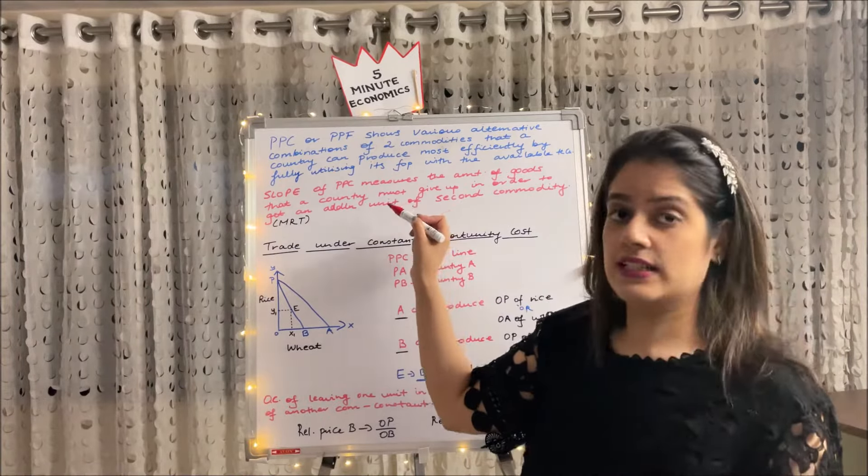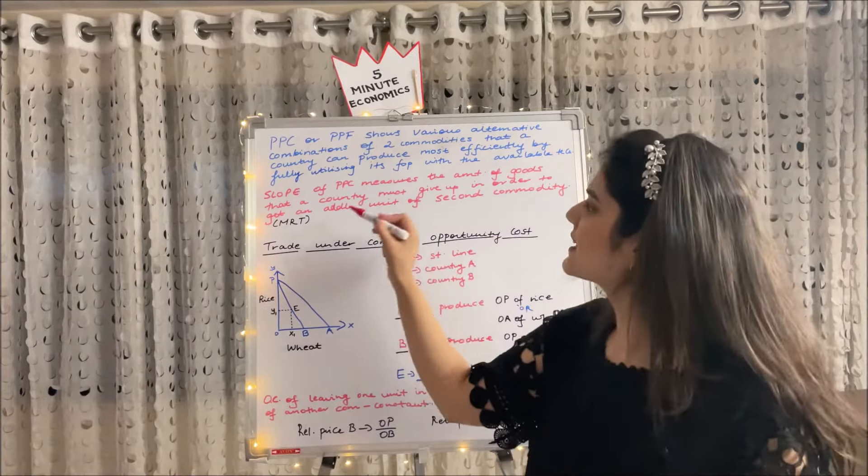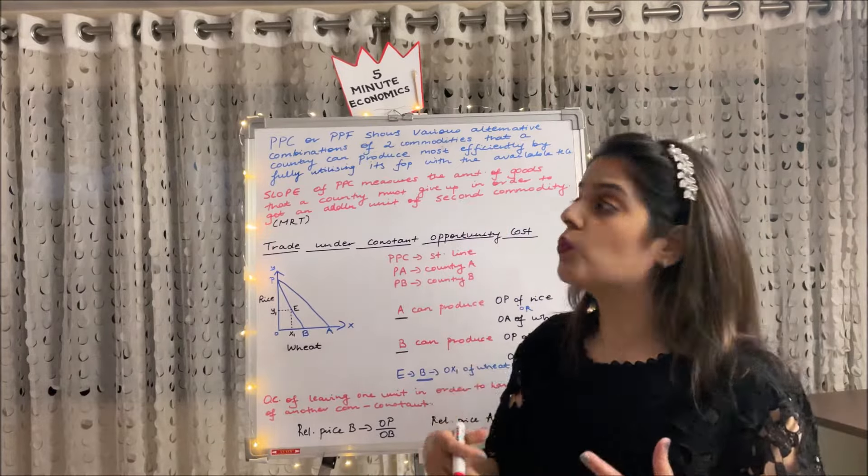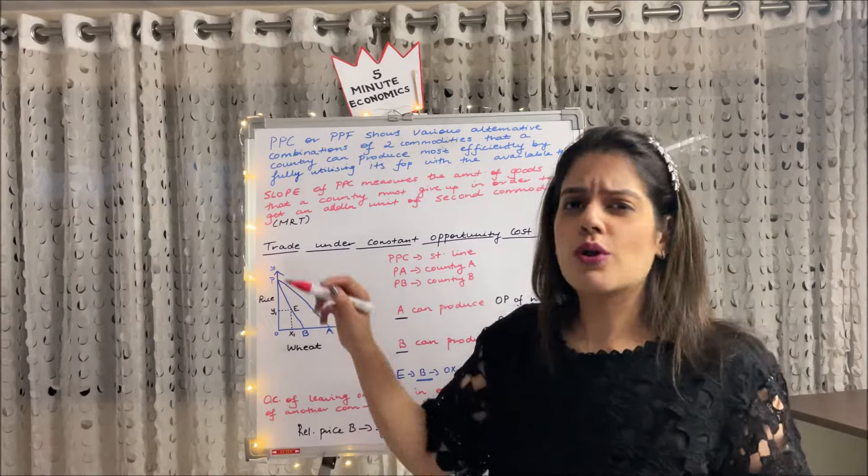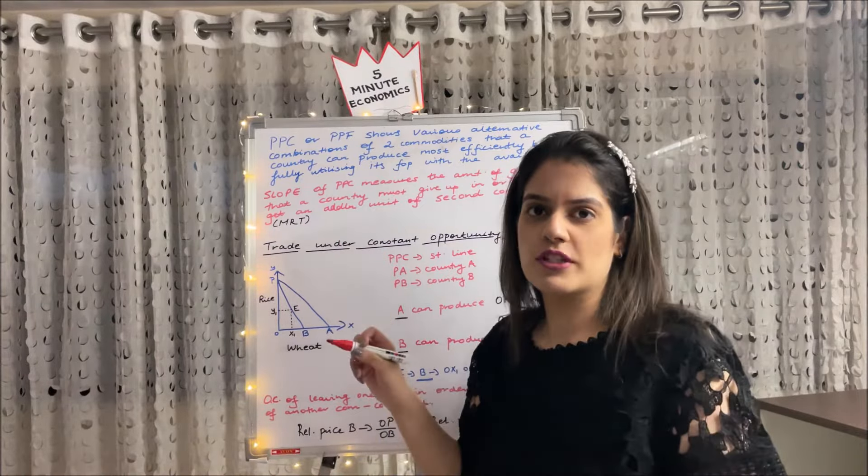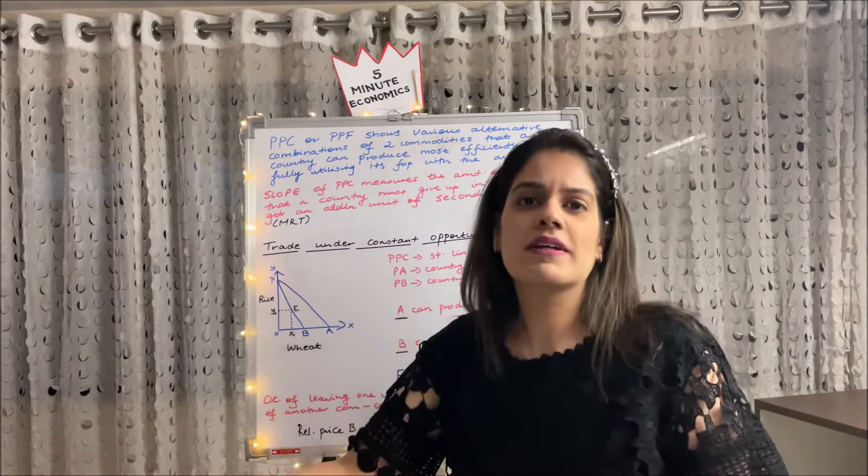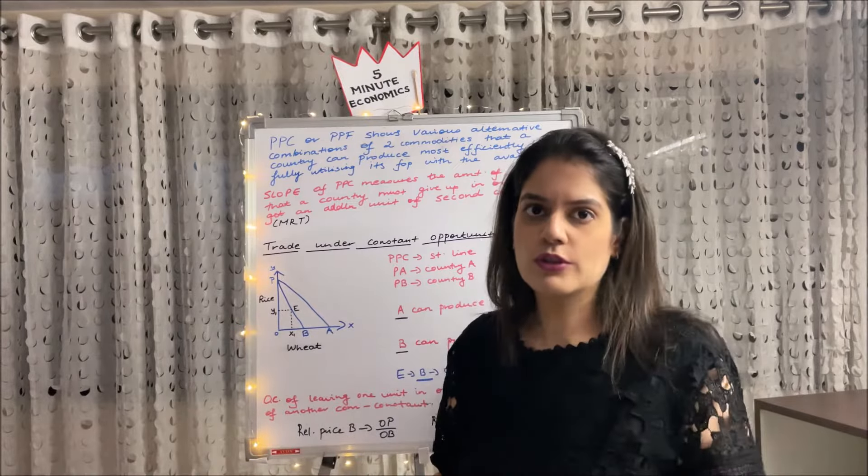Slope of PPC basically measures the amount of goods that a country must give up in order to get one additional unit of the second commodity. It is also known as MRT, which is Marginal Rate of Transformation. So how much of one unit we give up to get another good.